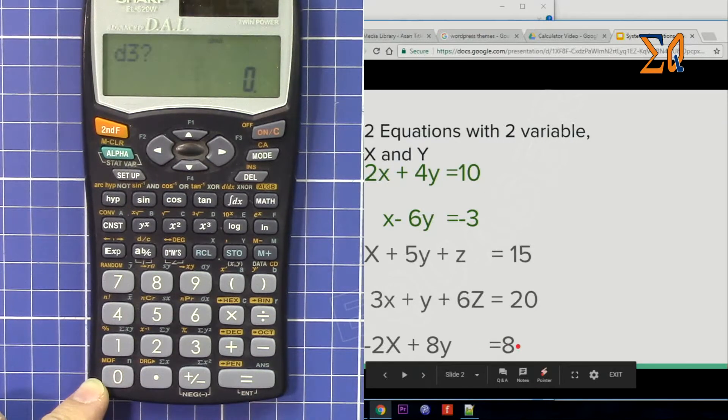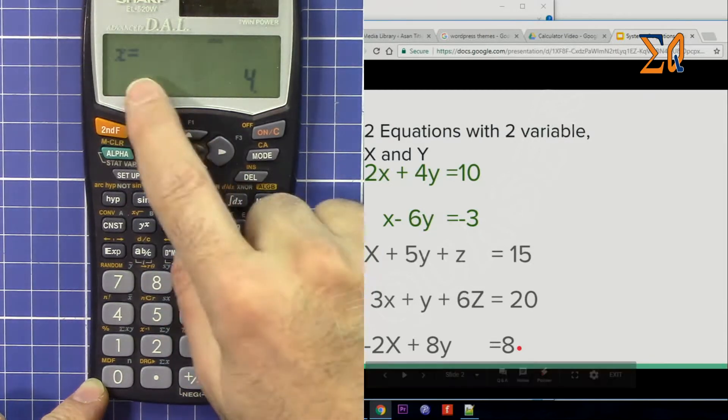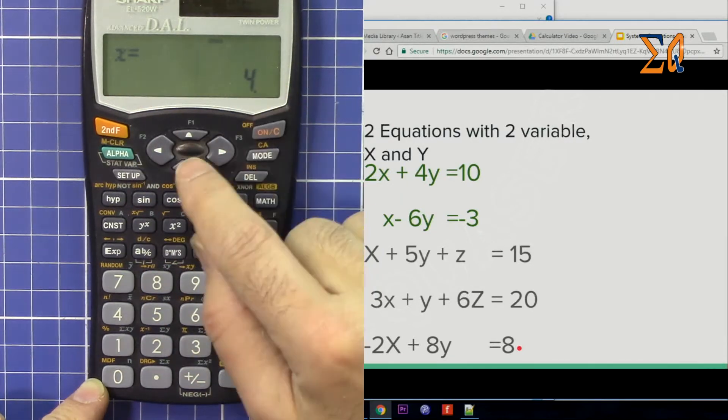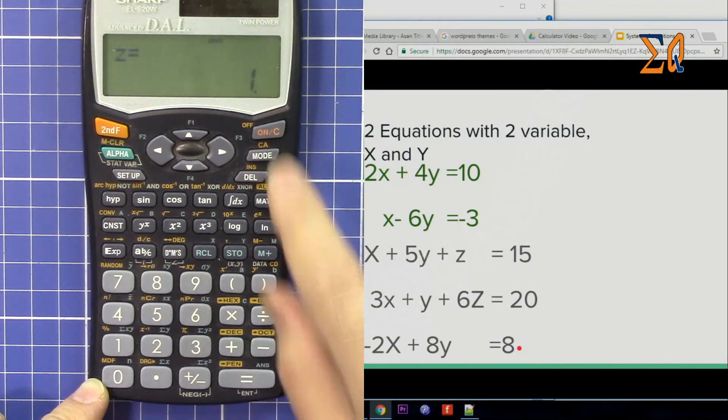Now we have the answer: X = 4. Press equal, Y = 2, and press equal again, Z = 1.